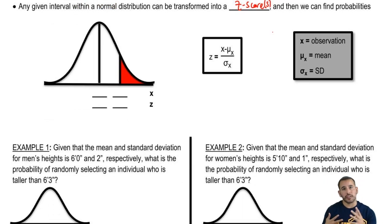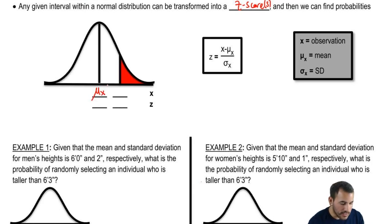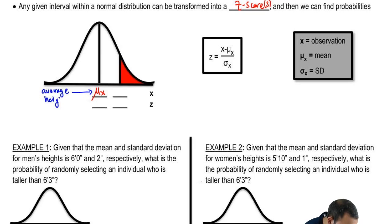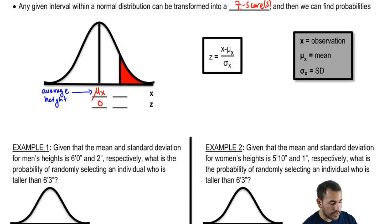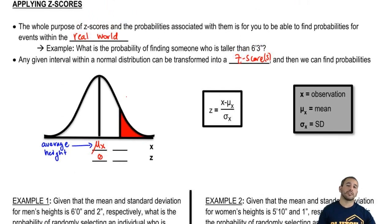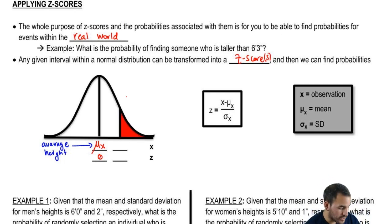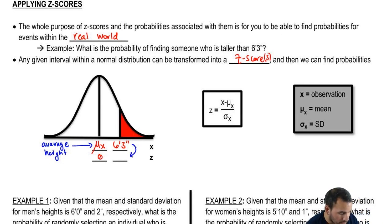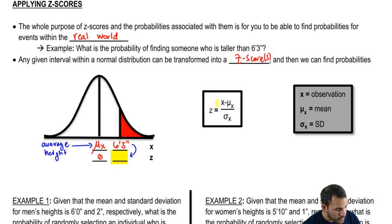Here's a quick example where we're talking about the person who's six foot three. In the middle we're going to have the average — the average height. The z-score for that average, or the mean, is going to be zero. The x-value we're interested in is 6'3". The x-value is the number you're interested in within the real world situation. We get a z-score for it by using the formula z = (x - μ) / σ.